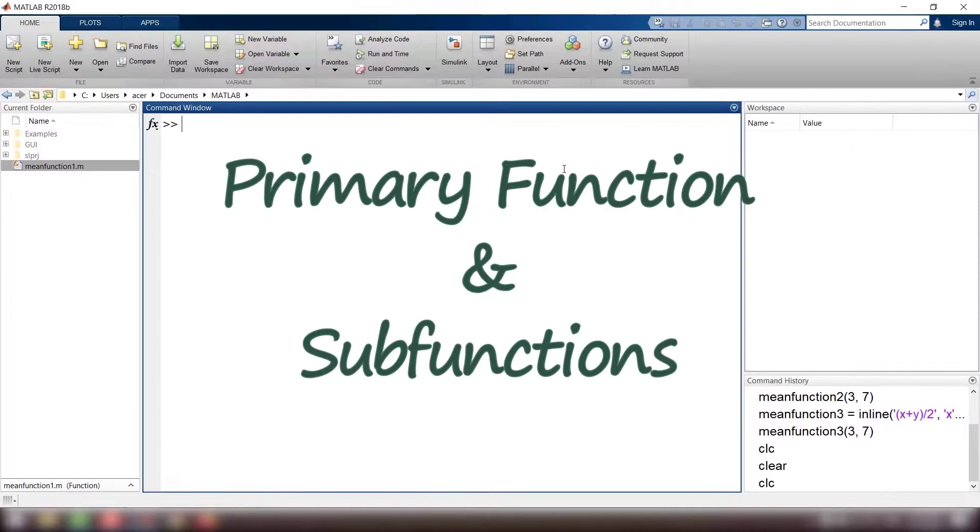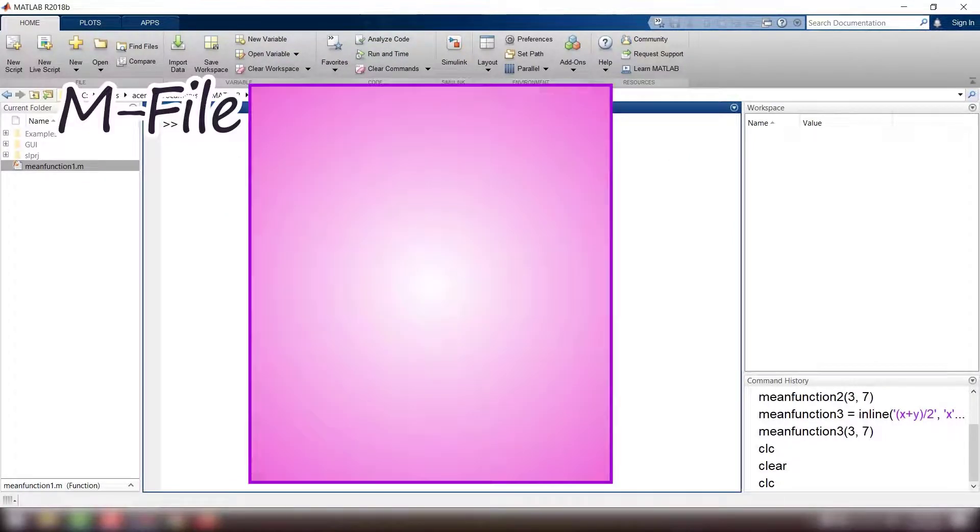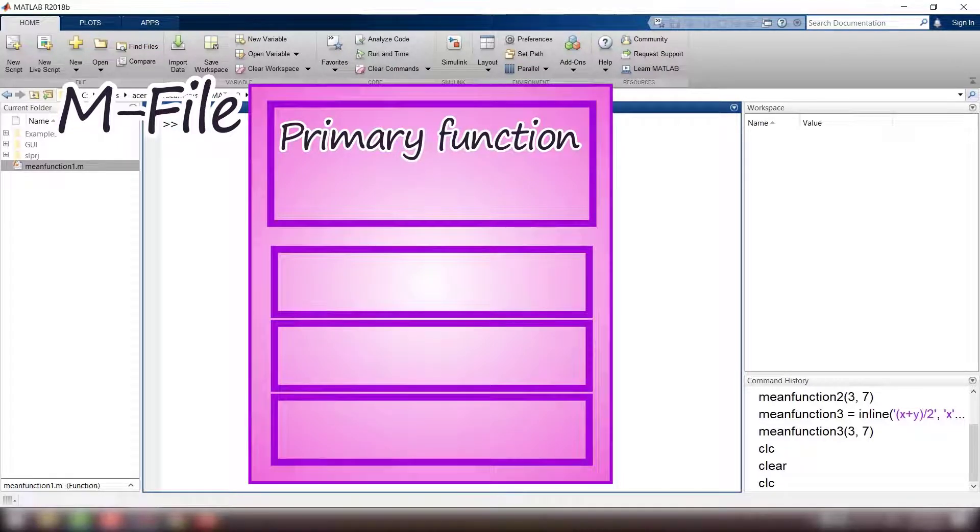Primary function and sub-functions: each M-file can contain more than one function. The first function is called the primary function whose name is the same as the name of the M-file. Other than that, we can have as many functions as we need. Sub-functions are only visible to primary function and other sub-functions within that M-file, so they cannot be invoked from the command window.